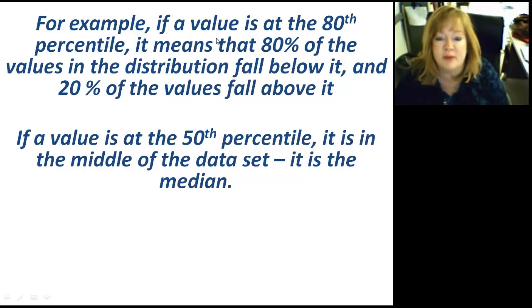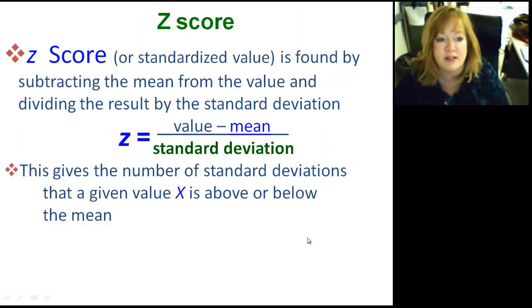For example, if you are in the 80th percentile, it means 80% of the values fall below that. So if you're in the 80th percentile, that means there was 80% of the people scored less than you did. And 20% of the values fall above it. So only 20% scored higher than you. If a value's at the 50th percentile, it's in the middle of the data set, and it's called the median. You already know how to find that. That's the middle of the data set.